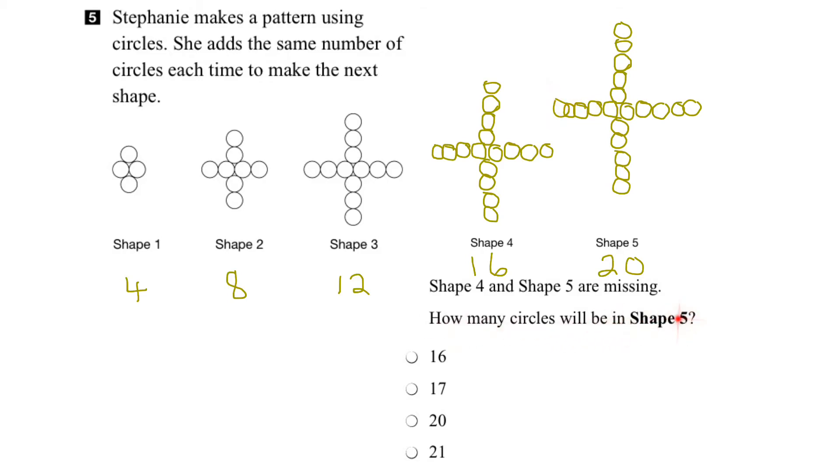So how many circles will be in shape 5? 20 circles. And there you go.